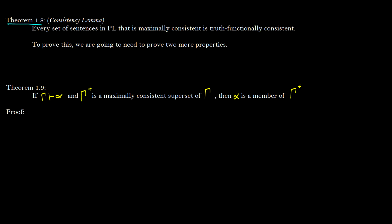Here's one. If gamma proves alpha and gamma plus is a maximally consistent superset of gamma, then alpha is going to be a member of gamma plus, which is the same thing as saying that gamma plus is going to prove alpha. We're going to assume that gamma proves alpha, and gamma plus is going to be a maximally consistent superset of gamma. By derivability, we know that if gamma proves alpha, then the maximally consistent superset is also going to prove alpha. This is one of our previous theorems.